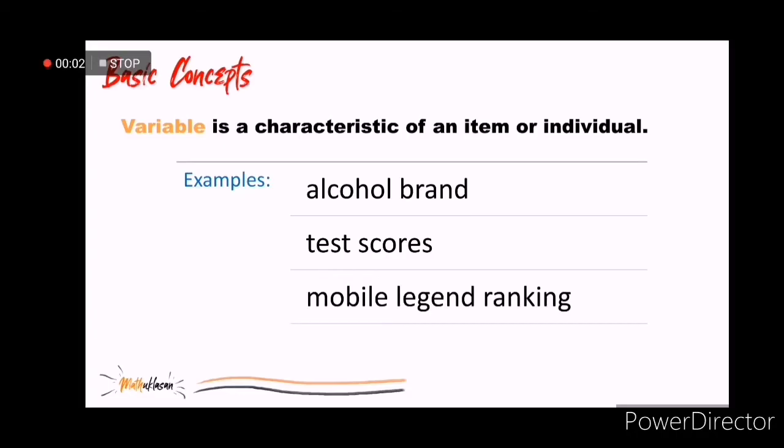Variable is a characteristic of an item or individual. From the word itself, variables can assume different values. For example, alcohol brand, test scores, mobile legend ranking.